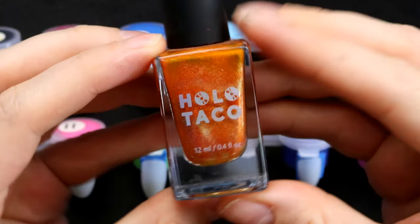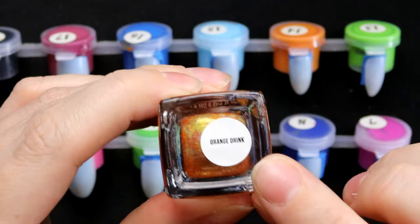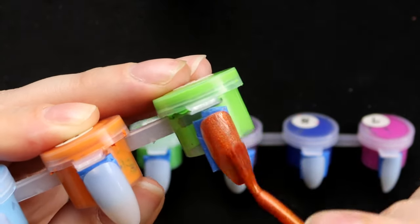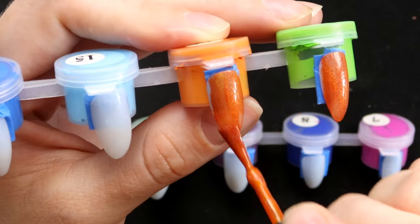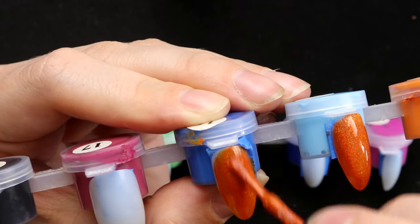I've got those all finished. We're going with Holo Taco by Simply Nailogical. This is Orange Drink. I'm just going through and evenly coating each of the nails. I'm not going in too heavy, but I am definitely trying to make it fairly opaque.